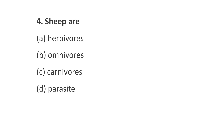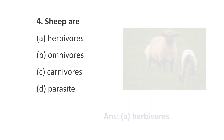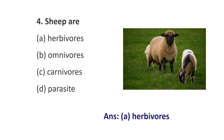Question number 4. Sheep are: Option A, Herbivores; Option B, Omnivores; Option C, Carnivores; Option D, Parasite. The answer is Option A, Herbivores. Herbivores means plant-eating animals. So, sheep come under herbivore animals.